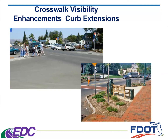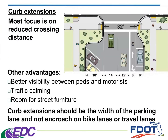Curb extensions, or bulb outs, are used in conjunction with on-street parking. Be mindful that furniture placed on curb extensions — such as newspaper stands or garbage cans — should not block the vision of small children or people in wheelchairs; we still need a clear line of sight. The main purpose of the curb extension is to reduce the crossing distance for pedestrians. There are many other advantages, including improving visibility between pedestrians and motorists and a traffic calming effect. The more squeezed in drivers feel, the slower they travel, and they become more aware of surroundings.